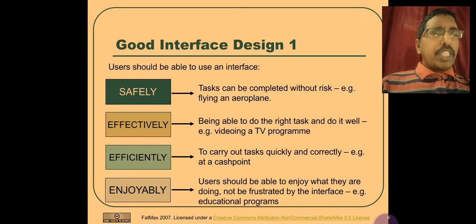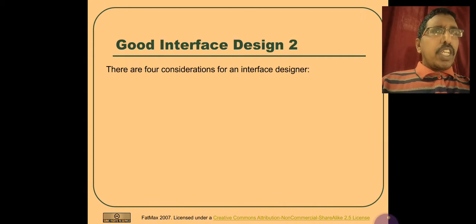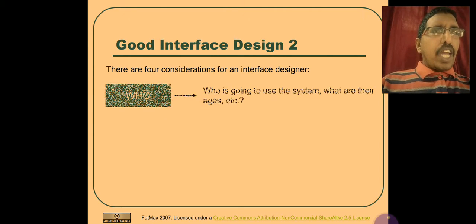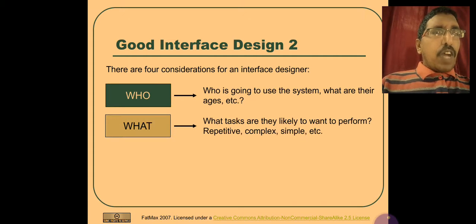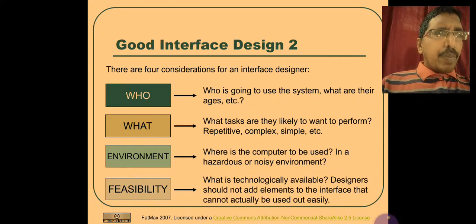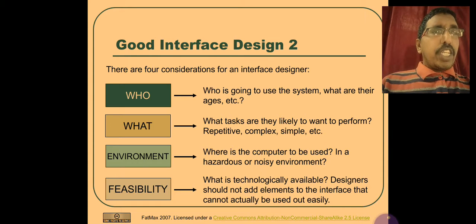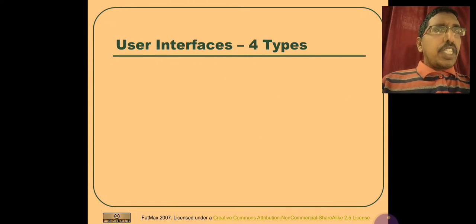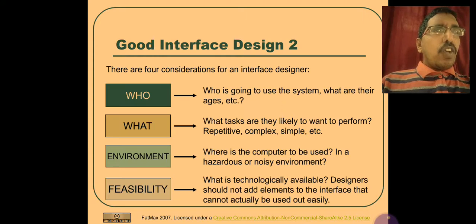These are the characteristics of a good interface, and there are certain factors to be considered by designers when designing an interface. They are: who is using the interface, for what purpose, what are the tasks that should be performed on the interface, and what is the environment. Environment implies where will you deploy the computer. And feasibility, is it feasible to use the interface. These are the four issues that should be kept in mind by designers when designing an interface.